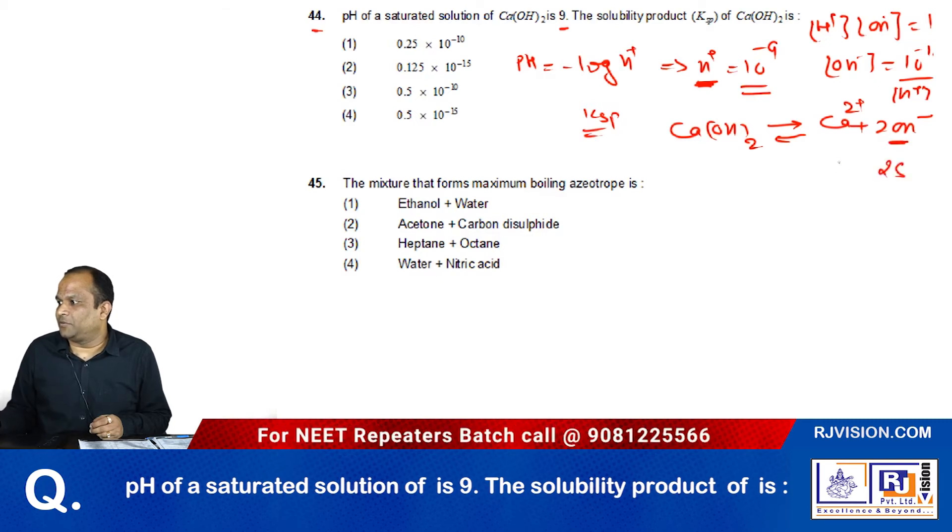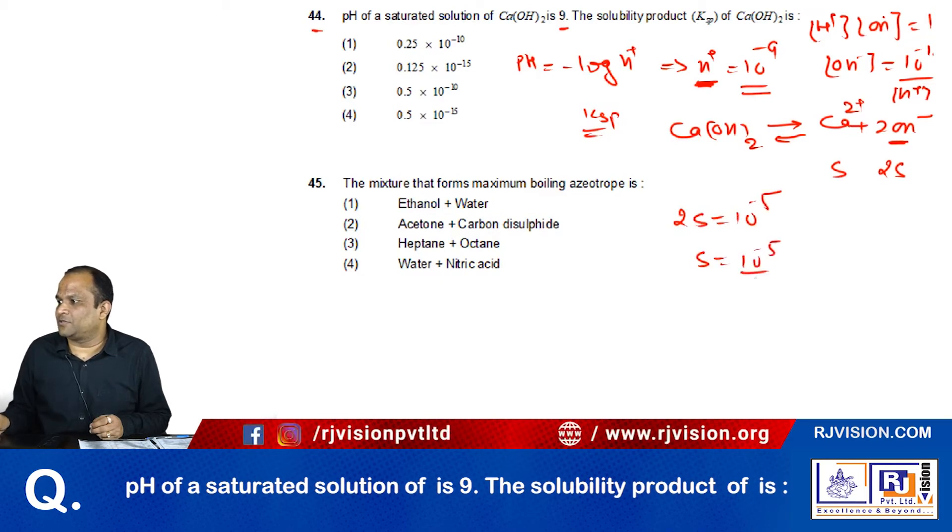Suppose this is 2S and this one is S. 2S value is 10 raise to the power minus 5, therefore S equals 10 raise to the power minus 5 divided by 2. So what is Ksp?